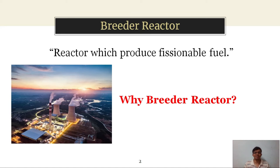To overcome this particular problem, the breeder reactor will be helpful. This breeder reactor will convert a fertile nuclei like uranium-238 into a fissile nuclei, that is plutonium-239. That means we are converting a stable nuclei into fissionable nuclei, and during this process, a small amount of energy is also released.